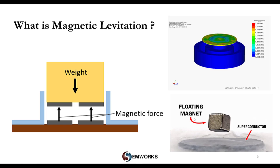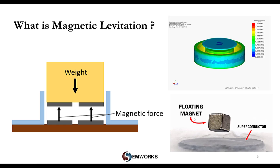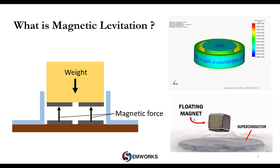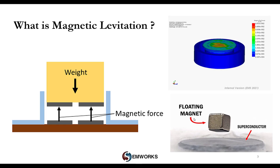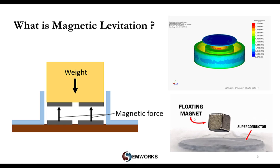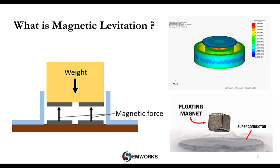As a refresher, magnetic levitation is a method by which an object is suspended in the air with no support other than magnetic fields. The fields counteract gravitational pull. It is a highly advanced technology with various uses — the common point in all applications is the lack of contact and therefore no wear or friction. This increases efficiency, reduces maintenance costs, and increases product lifespan.